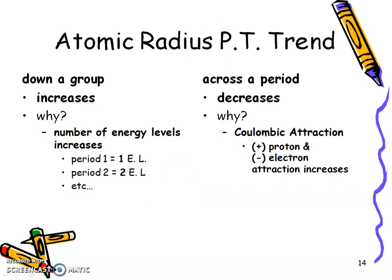So now we have to understand the trends. And trends tell us, as we go down a group, the size of the atoms are going to increase because we're increasing the amount of energy levels. So remember, period one only has one energy level, period two has two energy levels, and so on. So obviously, if we're gaining a whole energy level, we're going to be gaining size.